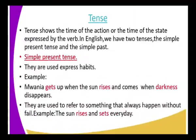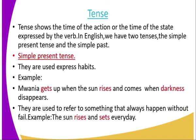We also have two types of tense in verbs. We are going to look at the simple present tense and the simple past tense. Tense shows the time of the action or the time of the state expressed by the verb. In English we have two tenses: the simple present tense and the simple past tense.